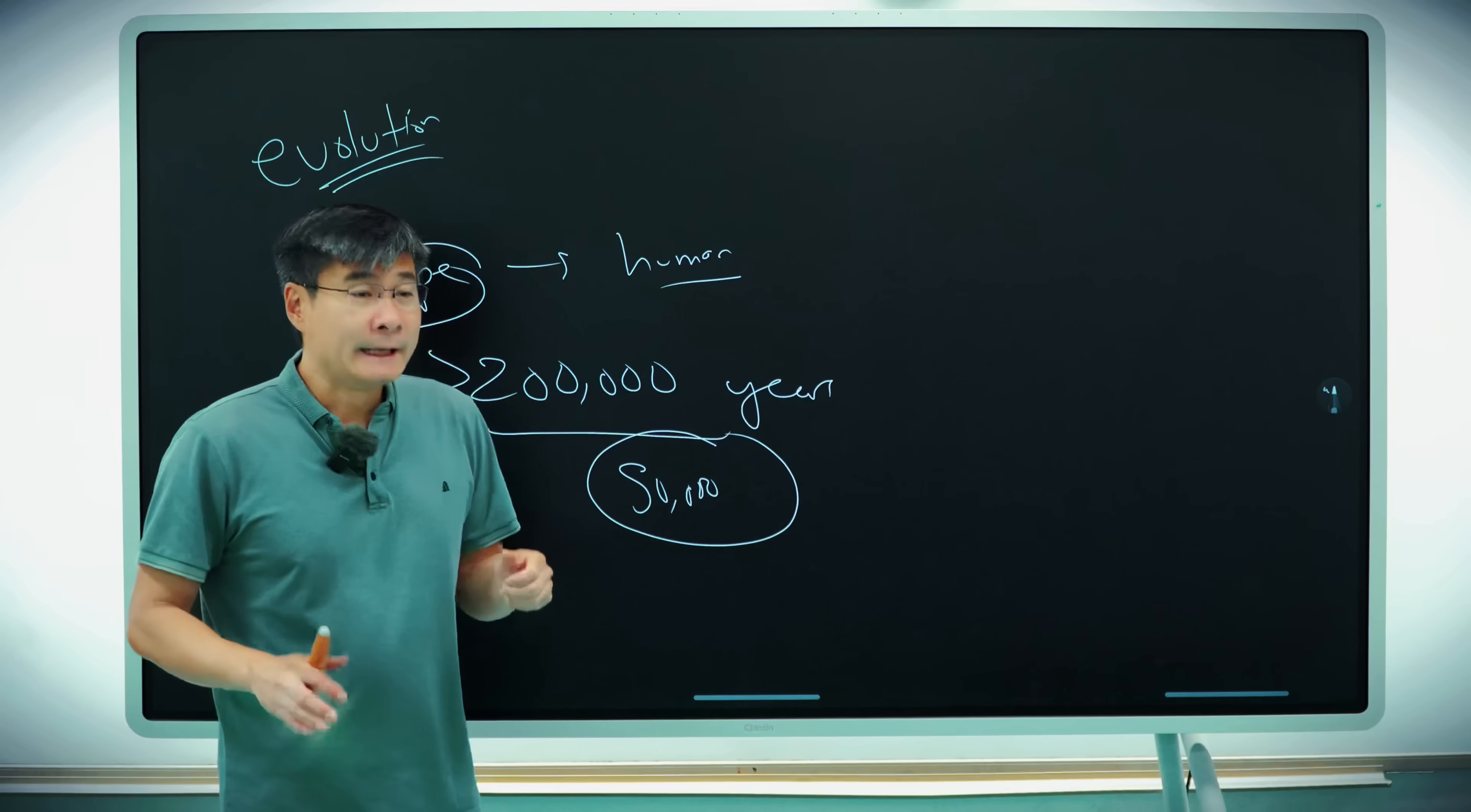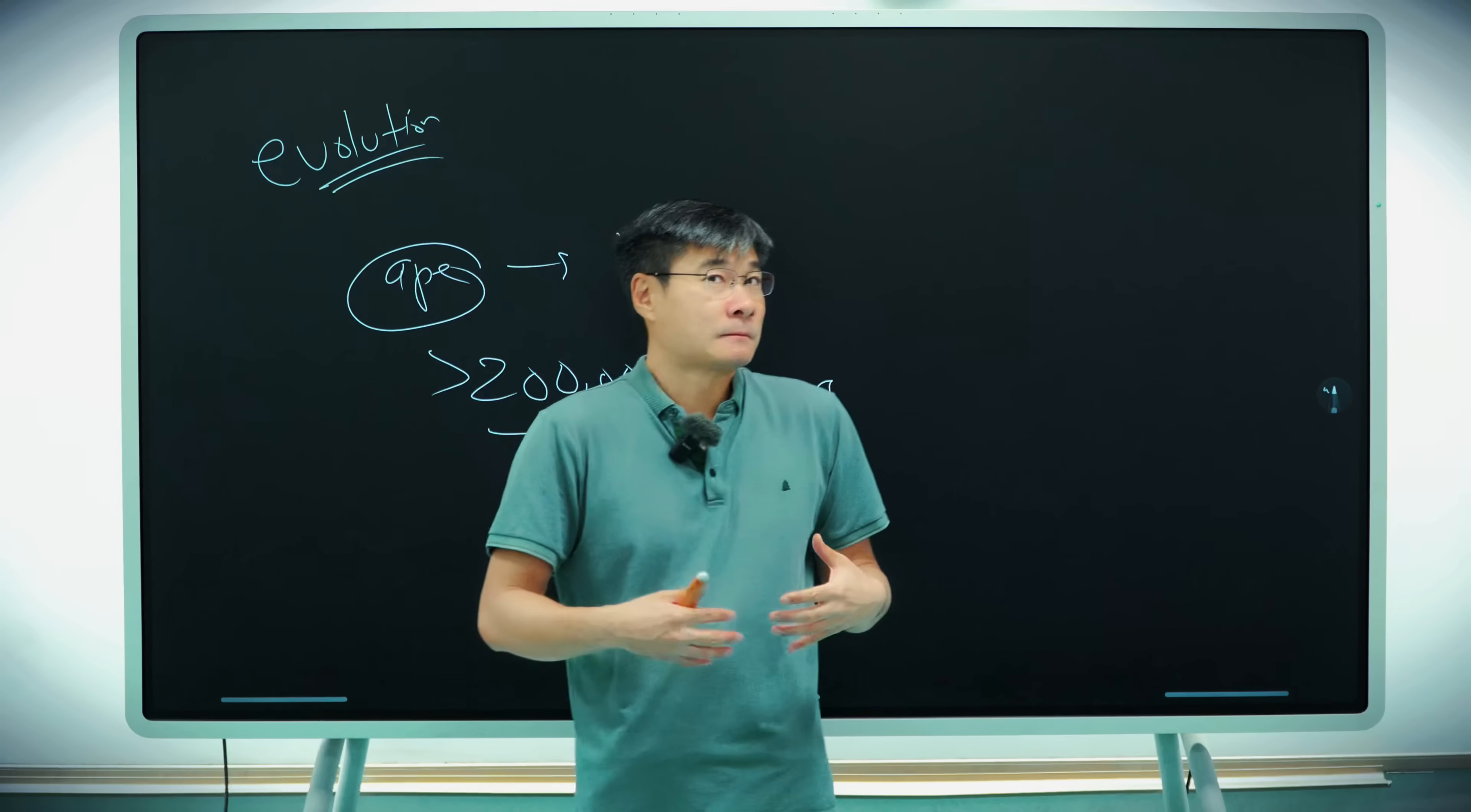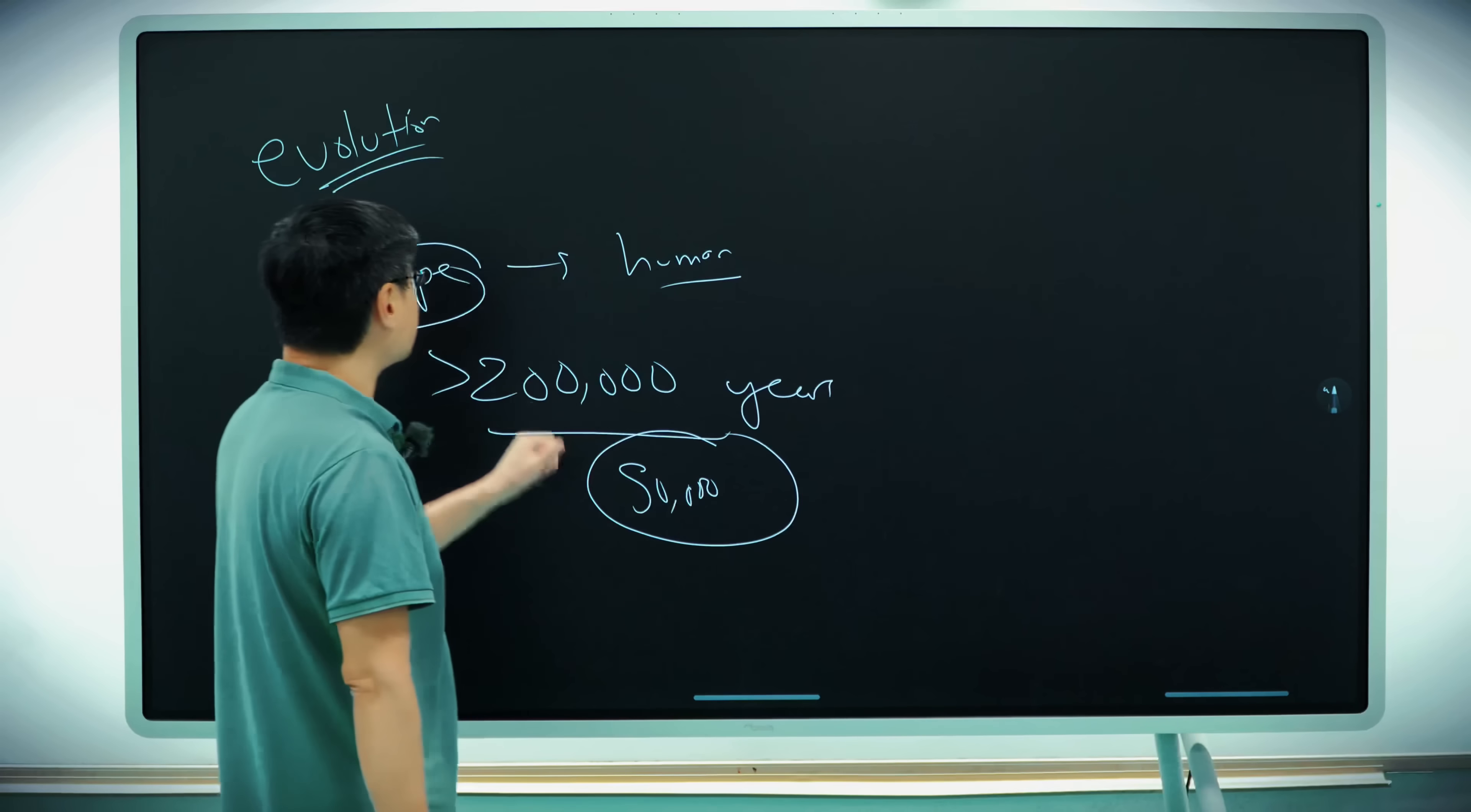The third problem is, according to evolution, there should be many different types of human beings. But in fact, there's only one, Homo sapiens. Now, what scientists will tell you is, well, before there were different species. The Neanderthal, the Cro-Magnon, and then gradually Homo sapiens took them over. And you can believe that, but it's problematic because, according to evolution, there should be many, many different types of humans. Maybe some with six fingers, some with three eyes, like animals. So the lack of diversity in the human species doesn't really fit into the evolution model. Alright, so that's the problem with evolution.